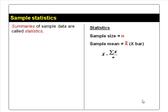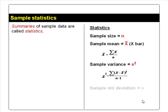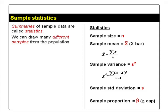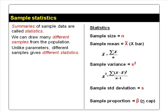Sample variance is denoted by s squared. Sample standard deviation, denoted by s, is the square root of sample variance. Sample proportion is denoted by p-hat. We can draw many different samples from the population of interest. Hence, unlike population parameters which have only one true value each, different samples are likely to give you different sample statistics.